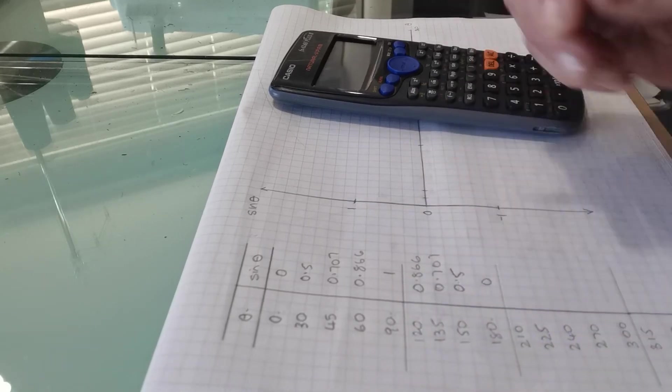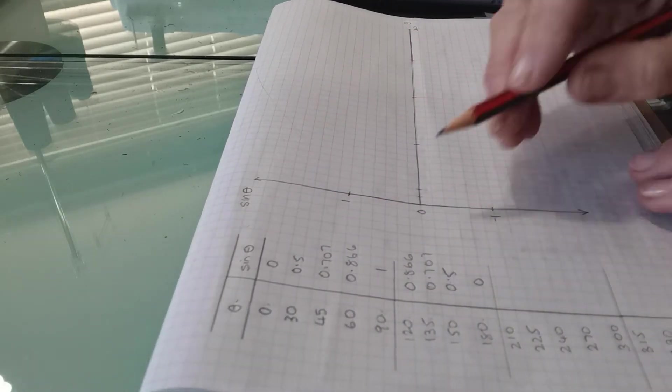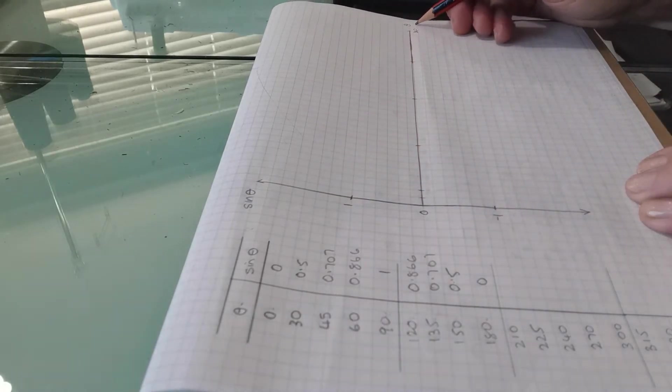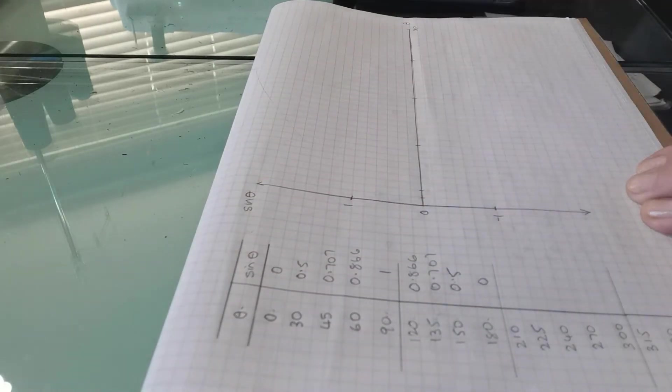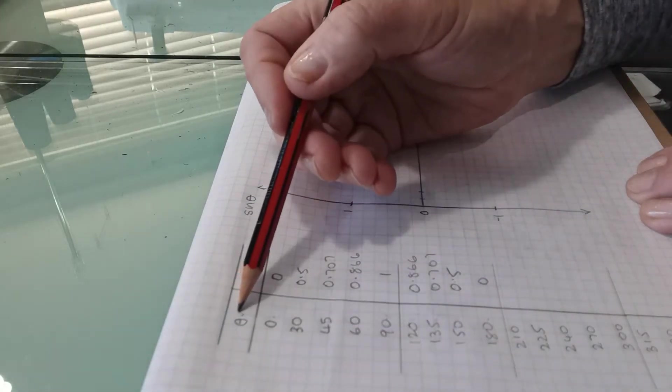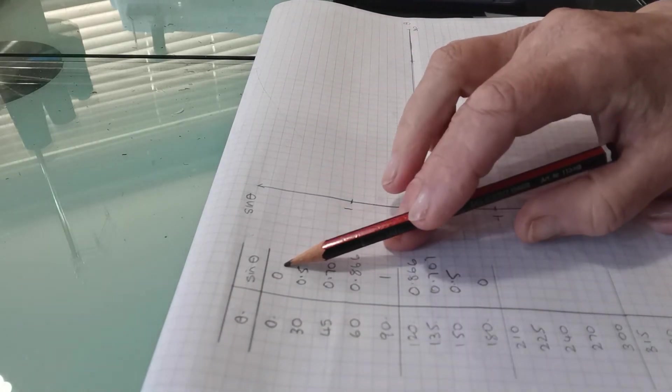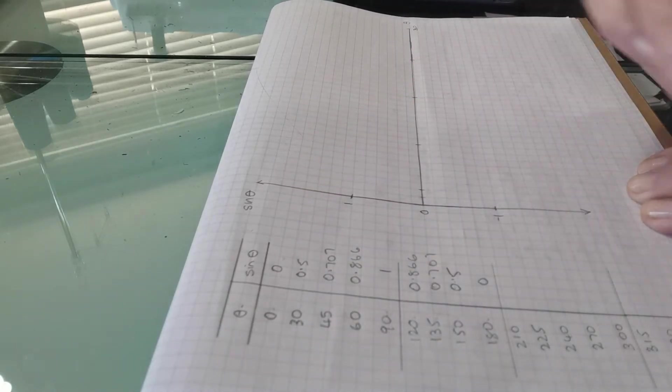So we'll start plotting these on to our graph. So the first one when the horizontal axis is the theta axis is the theta axis so we've called that theta and the vertical axis is sine the sine of theta. So these are going to be on the horizontal axis and these are the corresponding rises along the vertical axis.